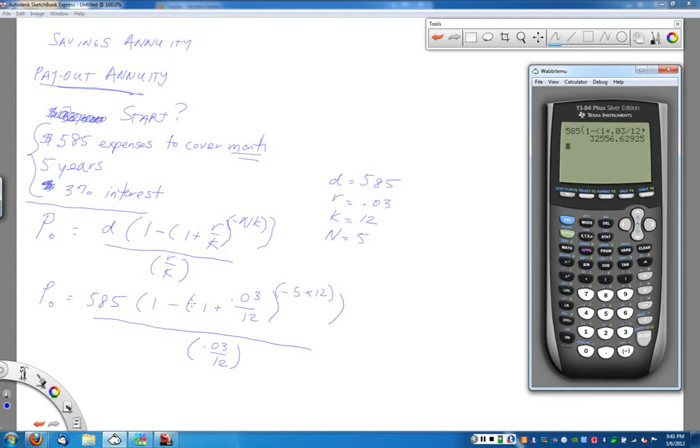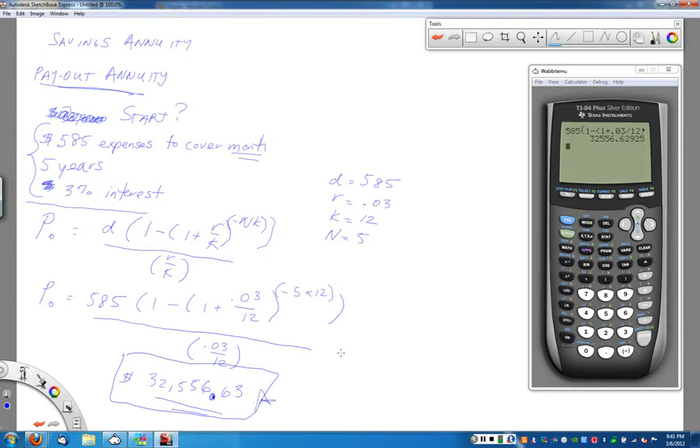And when I do that, I come up with $32,556.63. So if I can have an account with this much money in it, I can take out $585 per month for five years and meet all of my obligations by the end of that compounding time. So that is the answer to the question, how much money would I need in my account at the beginning? Remember, P0 is the amount of money that you need at the beginning.